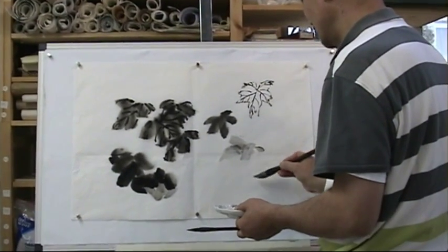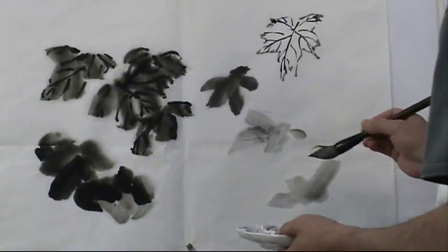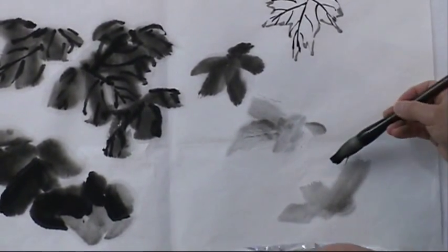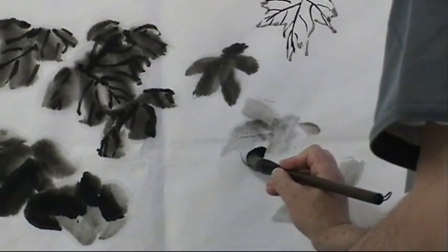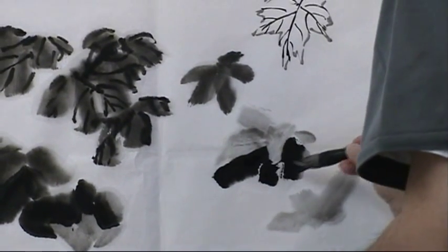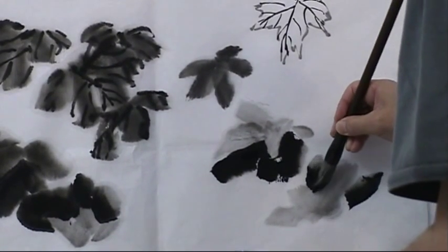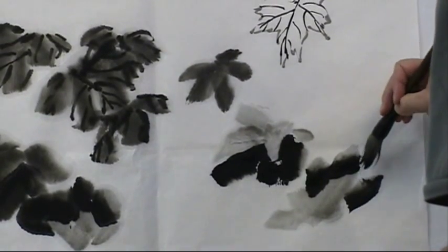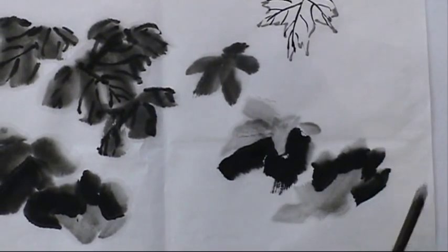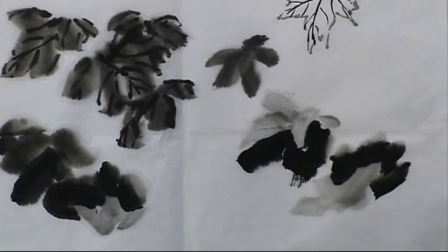Usually the first stroke determines the direction of the leaf, the main direction facing which direction, the left or right or up. I try to create a strong contrast here. Then use darker ink.